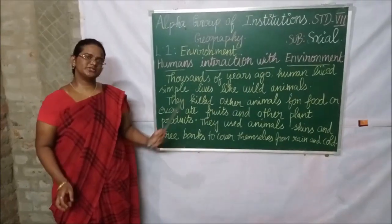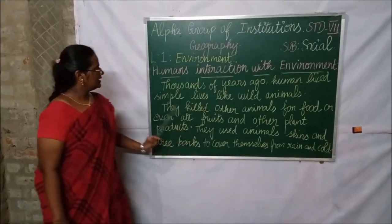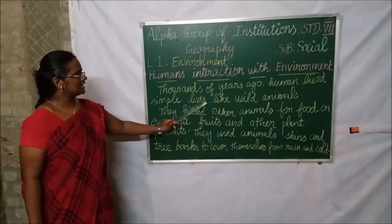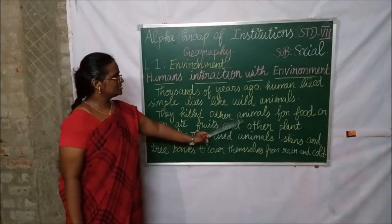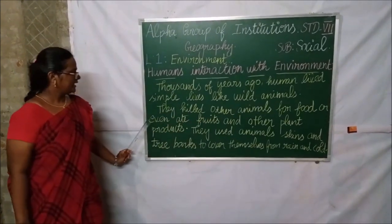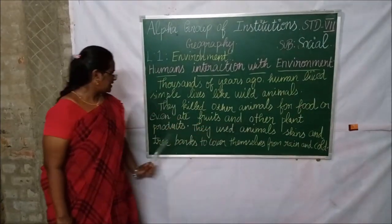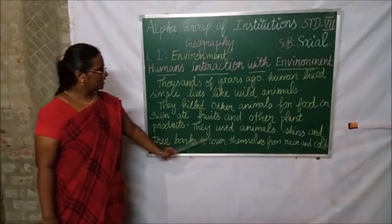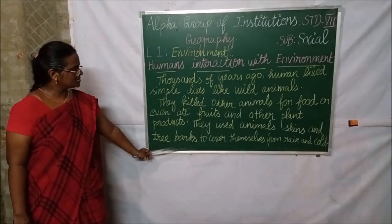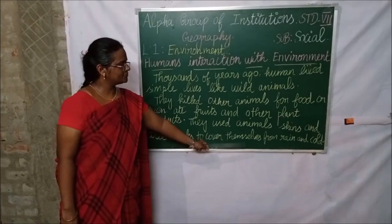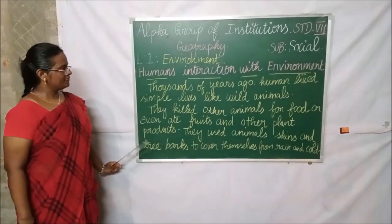Thousands of years ago, humans lived simple lives like wild animals. They killed other animals for food or ate fruits and other plant products. They used animal skins and tree barks to cover themselves from rain and cold.